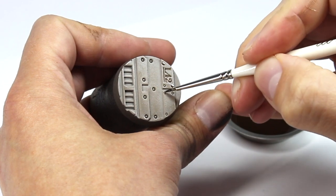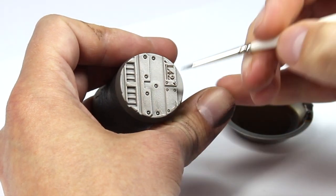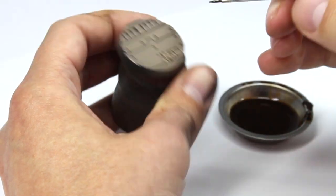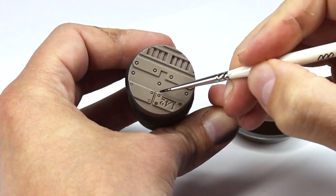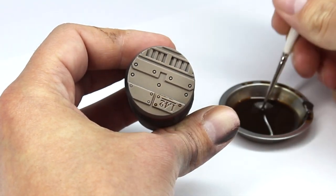I could have made the enamel wash run in just as easily had I thinned it further. If the wash is really thin, like it is here, I might need to apply a couple of coats of it.